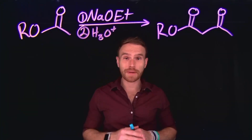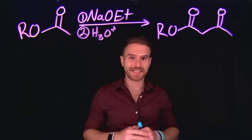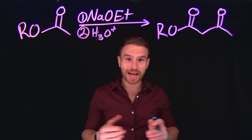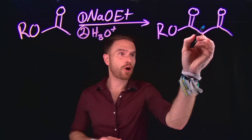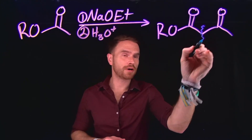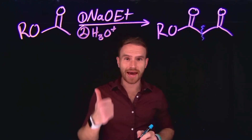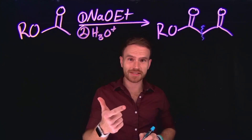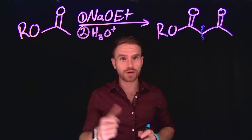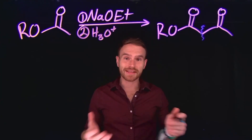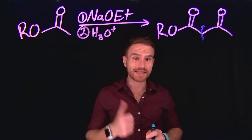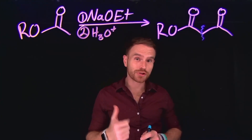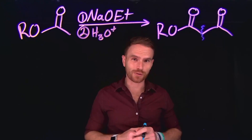First, let's talk about Claisen condensations. This reaction is a key method for forming new carbon-carbon bonds between esters and ketones, or two different esters, and it leads to the formation of what are known as beta esters or beta ketones.